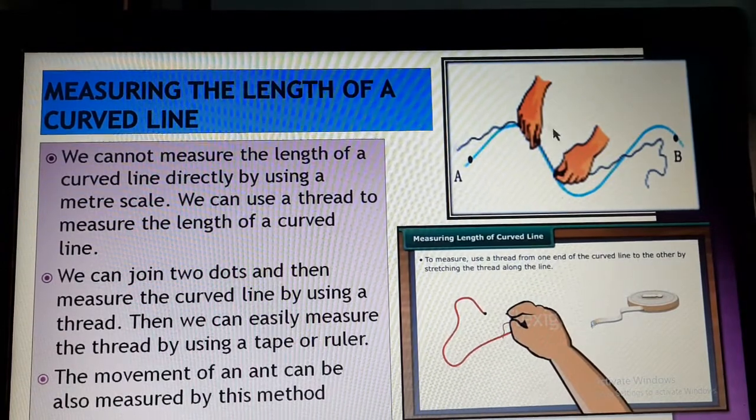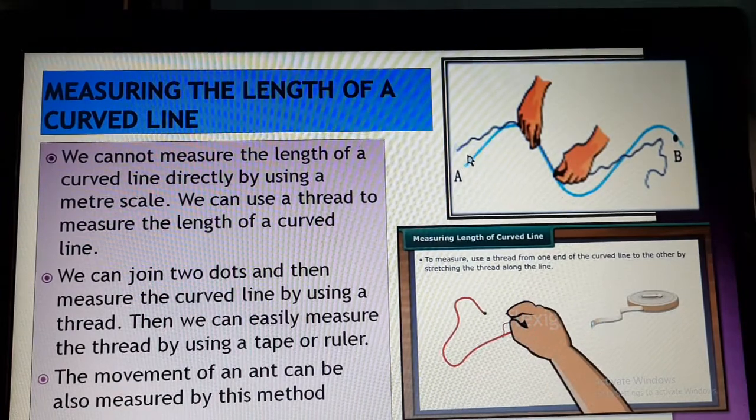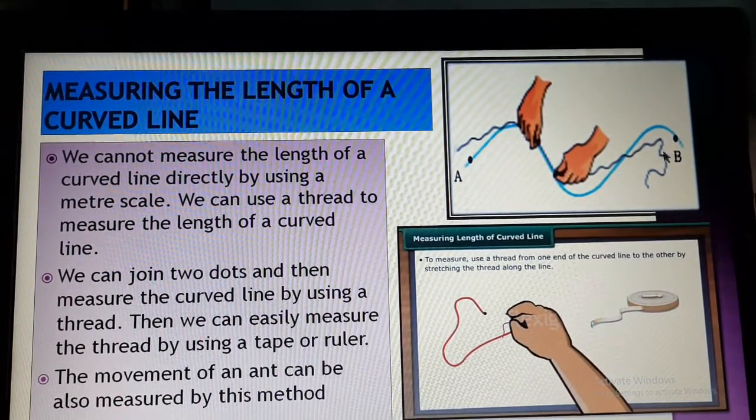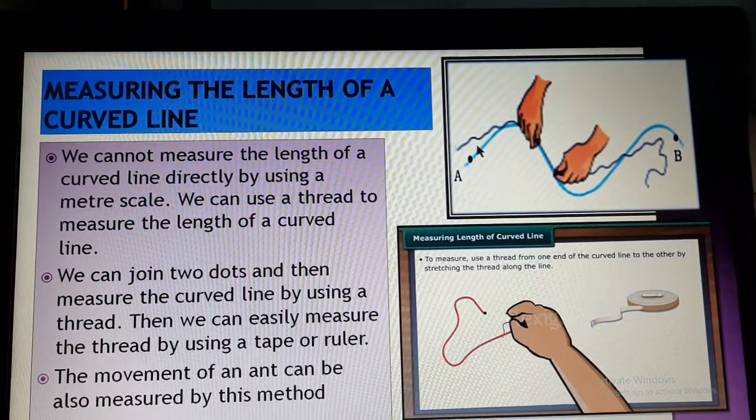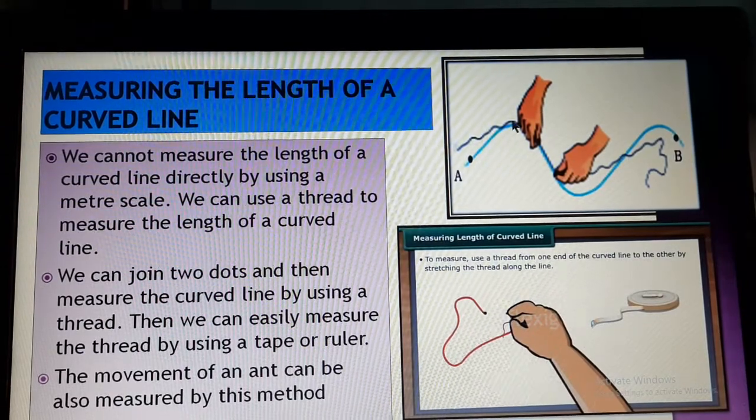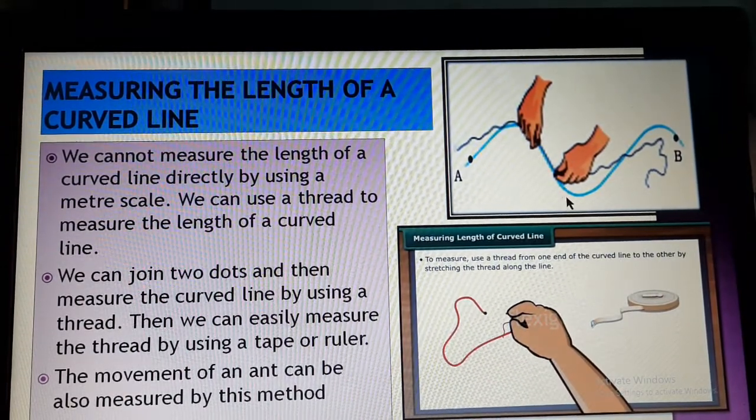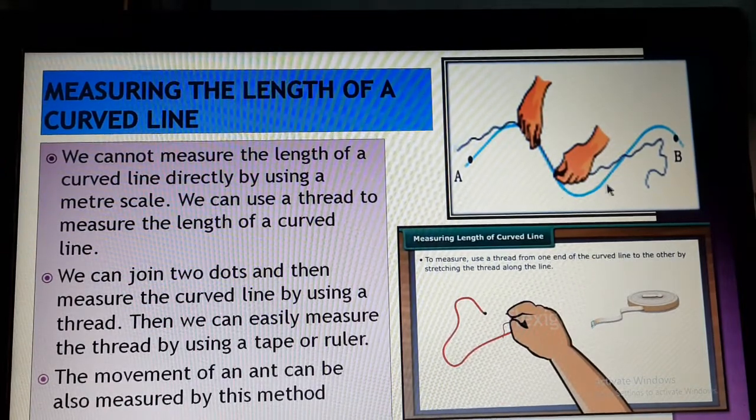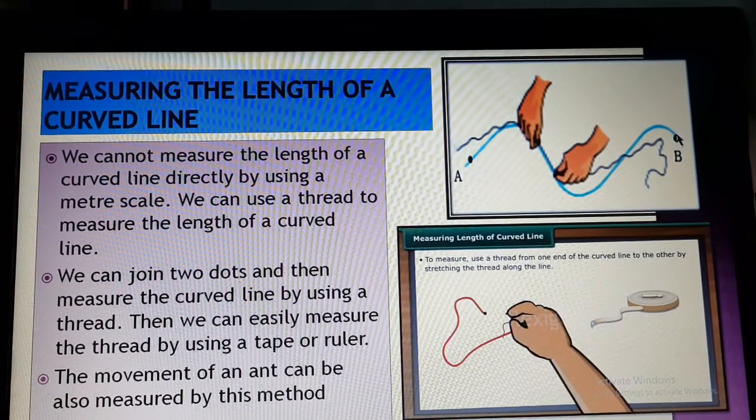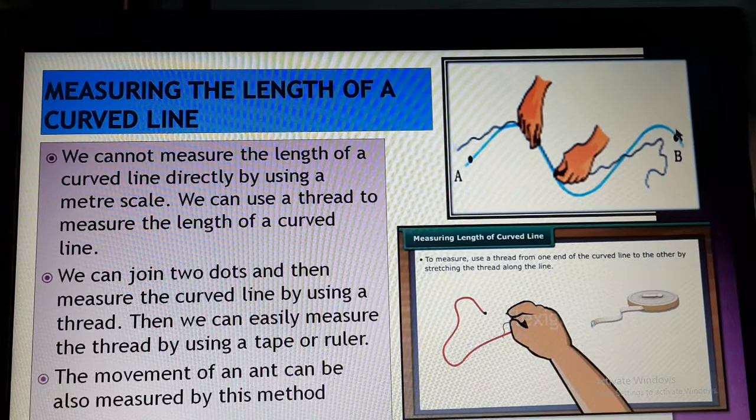So what they are doing, see the person has taken one thread. This black colored thing is a thread. And he is using the thread to measure the curved line at first. He is taking a thread, starting from this point. Suppose first from here to here. Then he is again holding from here to here. Then he is again holding this curved portion. Then here to here. Then the total portion up to B. Whatever thread is needed, he is cutting that piece of thread.